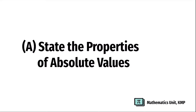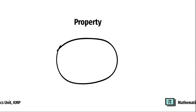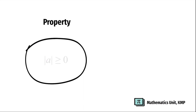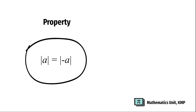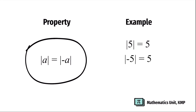Let's learn how to state the properties of absolute values. The first property: absolute value of A is greater than or equal to 0. For example, absolute value of 5 equals 5, and 5 is greater than 0. Absolute value of 0 is 0. The second property: absolute value of A equals absolute value of negative A. So absolute value of 5 equals 5, and absolute value of negative 5 is also 5. Therefore, absolute value of 5 equals absolute value of negative 5.